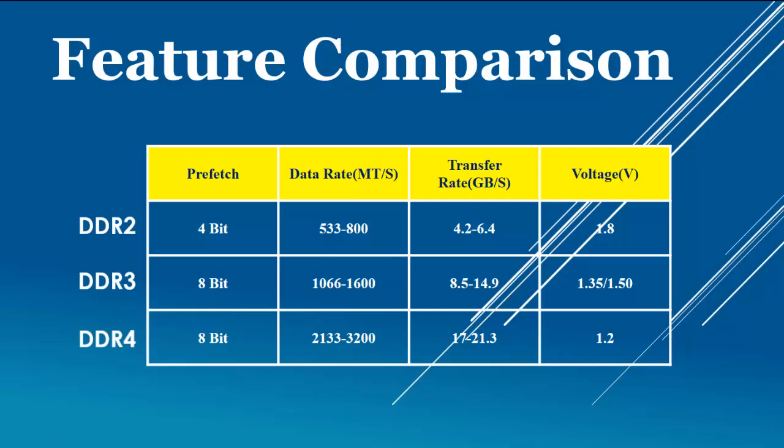whereas DDR3 has 1066 to 1600 million transfers per second. DDR4 has 2133 to 3200 million transfers per second,